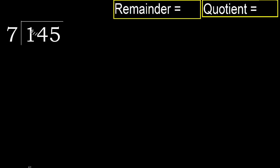145 divided by 7. 1 is less, therefore next: 14. 7 multiplied by which number is nearest to 14 but not greater? 7 multiplied by 3 is 21.